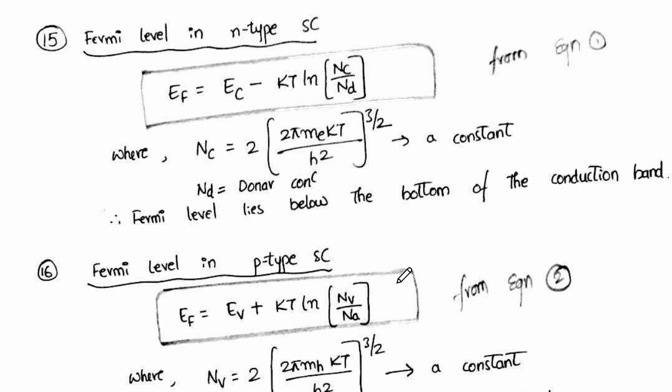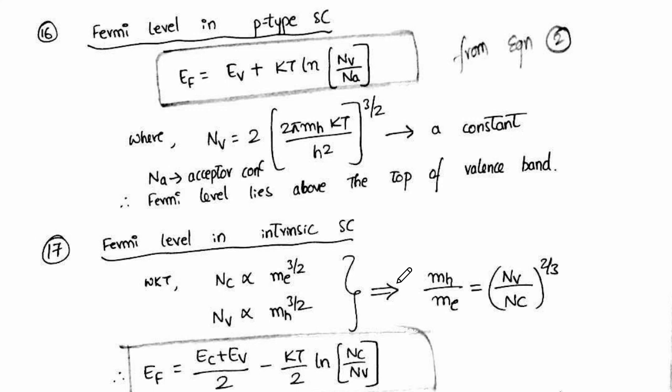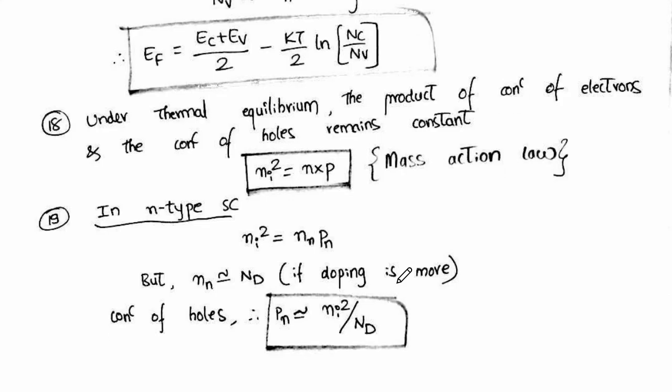If I am going through first, you can pause it and record the formulas. Fermi level in P-type semiconductor and Fermi level in intrinsic semiconductor, things like that.